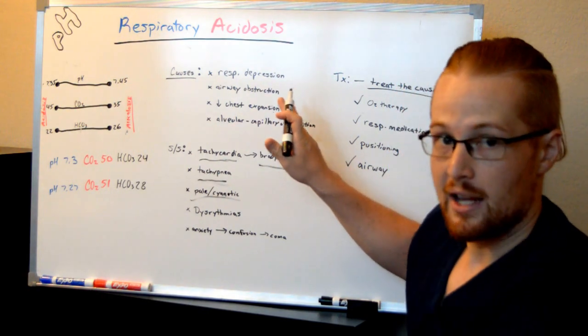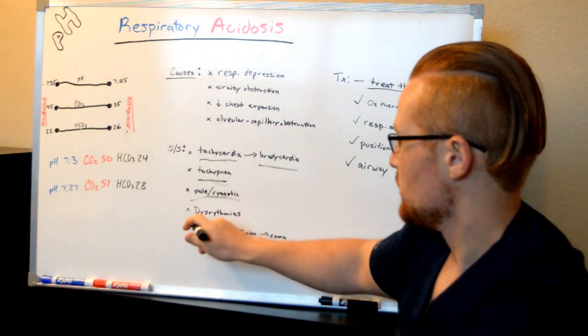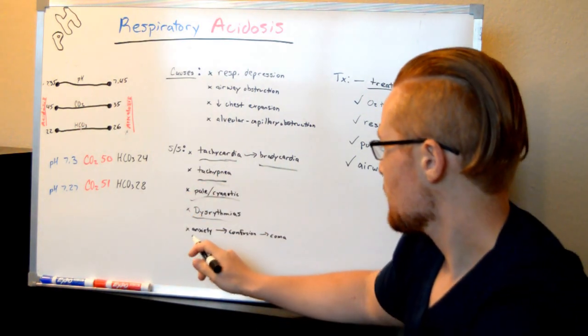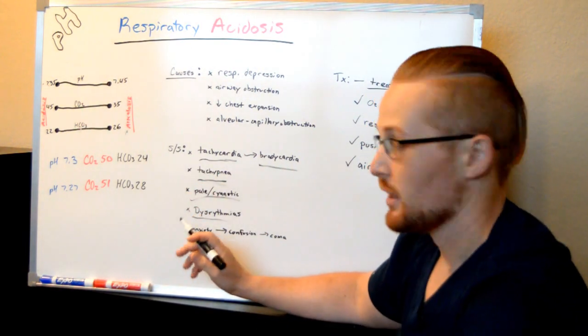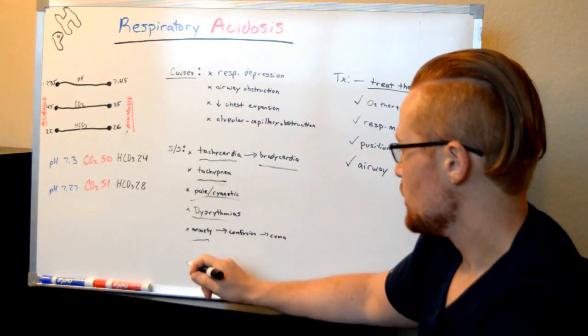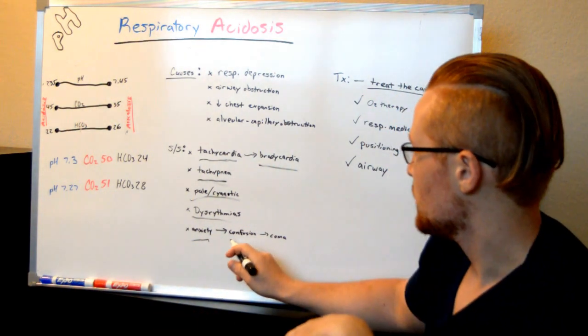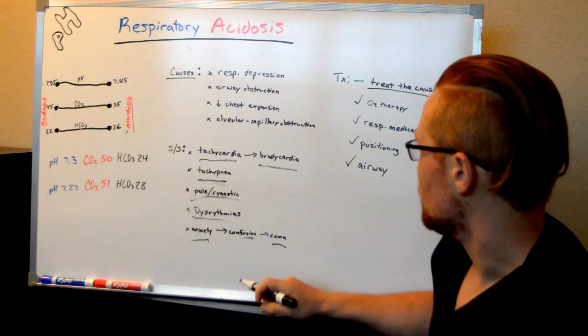With any of these disorders, acidosis or alkalosis, you're going to see dysrhythmias. So just remember that. Things in the body aren't right, the heart's not beating right. And the patient at first is going to feel like they're suffocating, so they can be anxious. But once their O2 levels drop, the brain doesn't have enough, they'll be confused, and eventually they can lead to a coma.